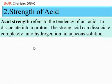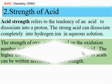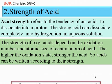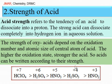Now, the strength of acids. Acid strength refers to the tendency of an acid to dissociate into protons. A stronger acid can dissociate completely into hydrogen ions in aqueous solution, while a weak acid only partially dissociates. The strength of an oxyacid depends on the oxidation number and atomic size of the central atom. The higher the oxidation state, the stronger the acid. Thus, acids can be ranked by strength: perchloric acid is the strongest acid and nitrous acid is the weakest, as seen from the oxidation numbers of their central atoms.